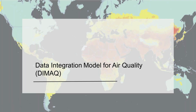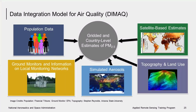In this section, I will describe the DMAQ model and the model input variables used to estimate surface PM2.5 globally. The Data Integration Model for Air Quality, or DMAQ model, estimates surface PM2.5 and associated measures of uncertainty at high spatial resolution by utilizing information from multiple sources. Currently, only annual mean estimates for the year 2014 are available. The sources of data include population data, ground monitor data and other information about local monitoring networks, simulated PM2.5 estimates, satellite-based estimates, and topography and land use information.